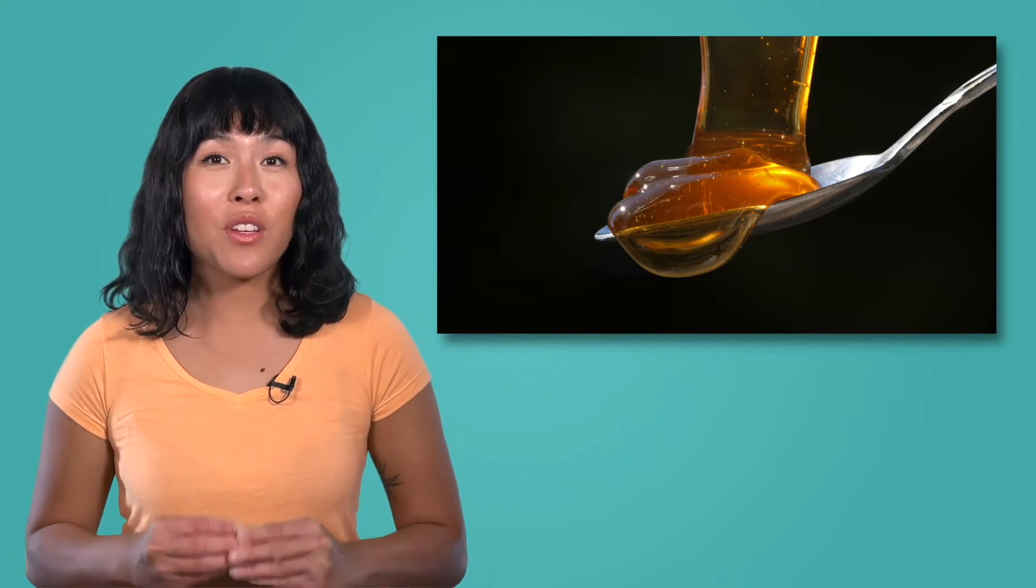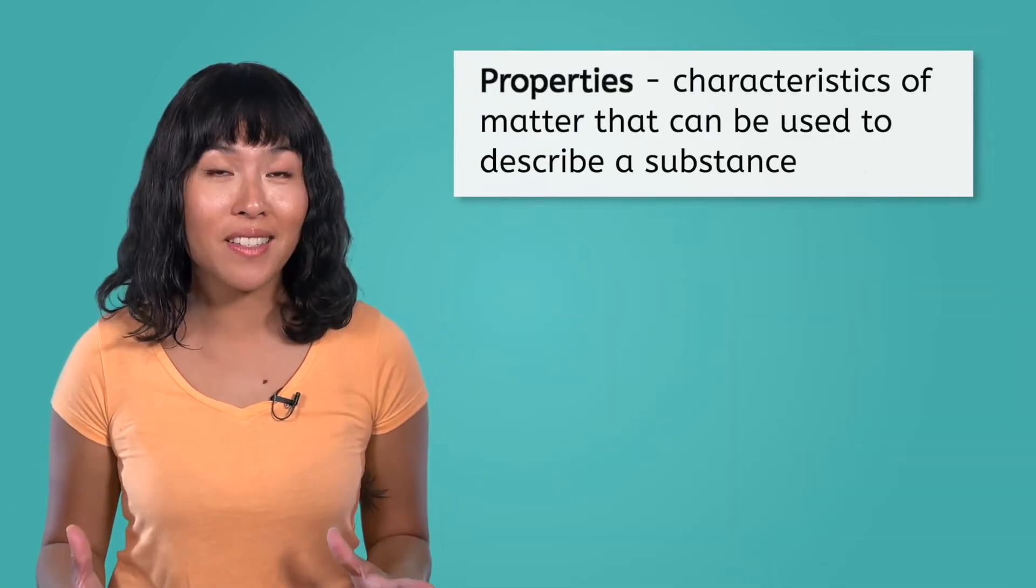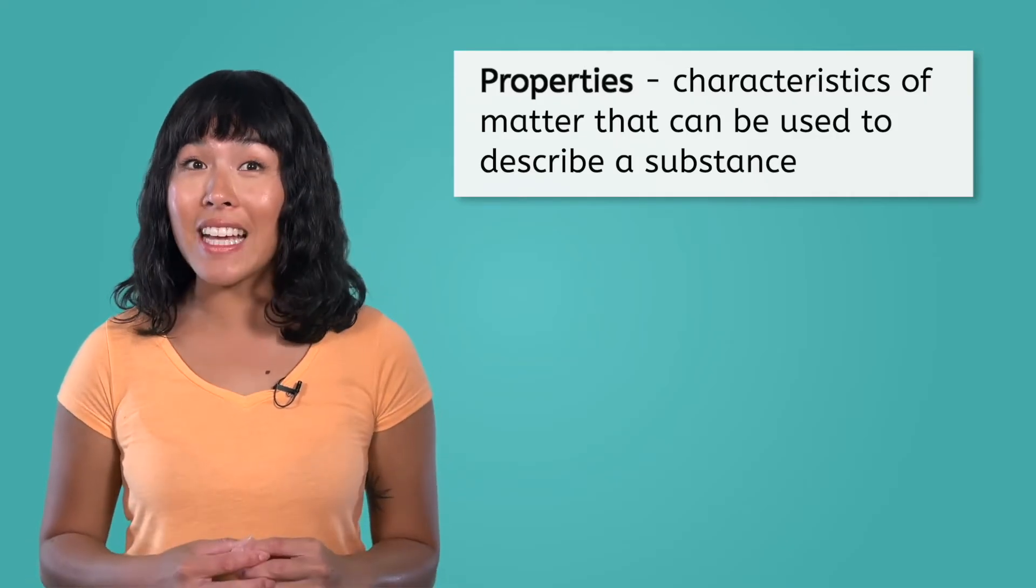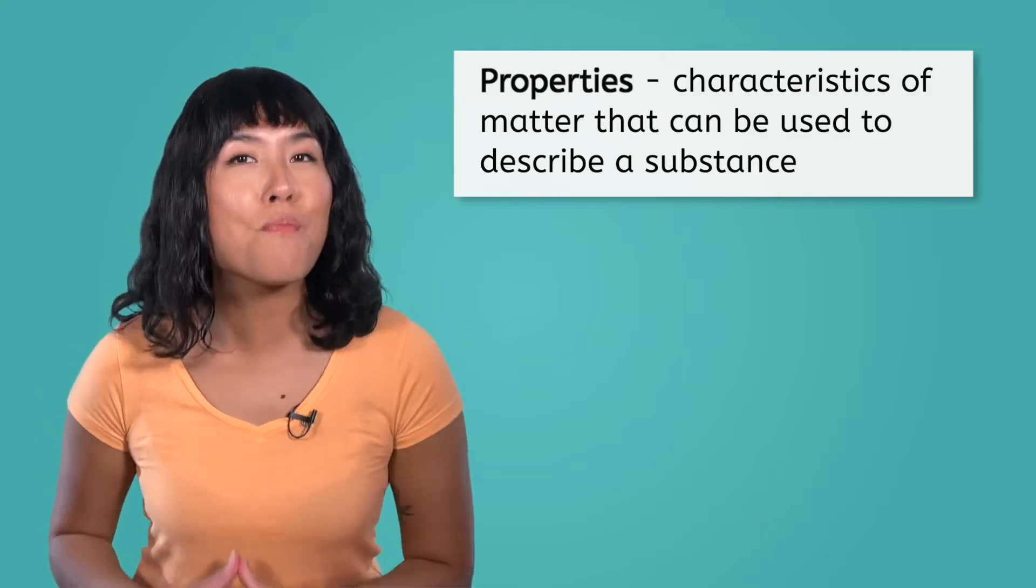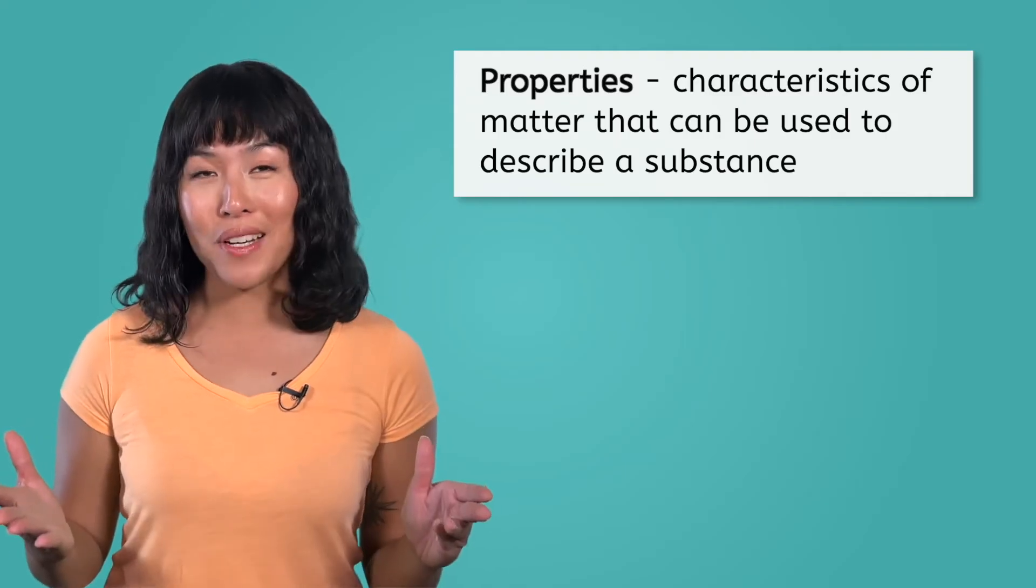To start, we can look for different ways to describe it, such as amber in color or flows slowly. We could even test its boiling point or calculate its density. All of these different ways that we can describe a substance are called its properties, and they can help us determine what type of matter we are looking at. In this video, in this lesson, we will look at the two main categories of properties, physical properties and chemical properties.